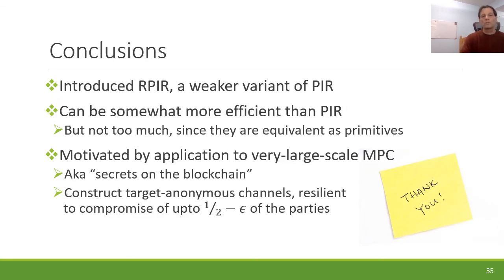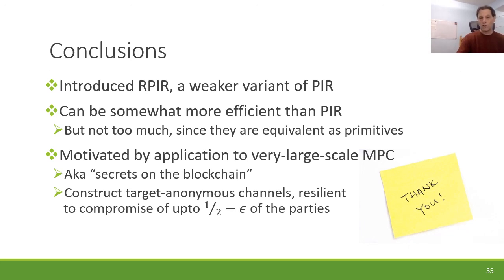In summary: we introduced Random Index PIR — a weaker variant of PIR that can be somewhat more efficient, though not too much since they are equivalent as primitives. There are still gains to be had, and it is motivated by our application to very large-scale MPC, which we call Secrets on the Blockchain. In particular, it allows us to construct target anonymous channels resilient to up to half minus epsilon of corruptions, as opposed to the Ben-Hamouda et al. solution which can only tolerate about a quarter of corruptions. Thank you very much.